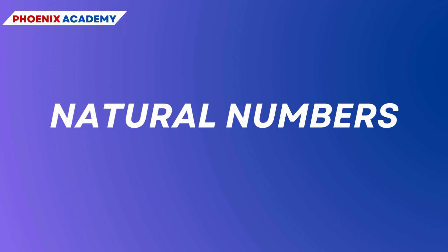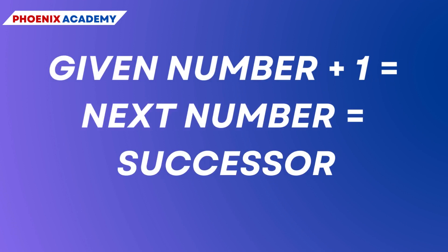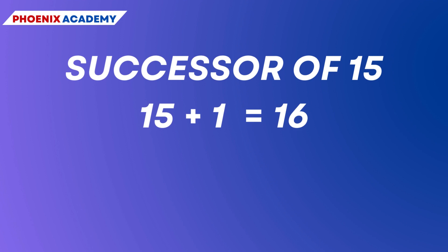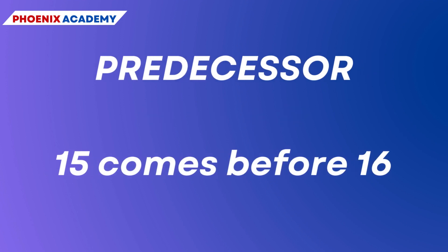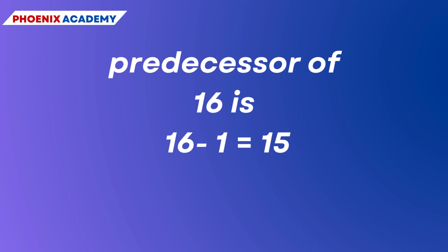Mathematicians call these counting numbers as natural numbers. Given any natural number, you can add 1 to that number and get the next number — that is its successor. The successor of 15 is 15 + 1 = 16, and that of 16 is 16 + 1 = 17, and so on. The number 15 comes before 16, so we say the predecessor of 16 is 16 − 1 = 15.